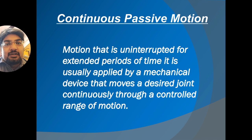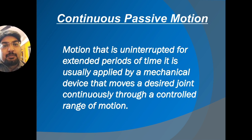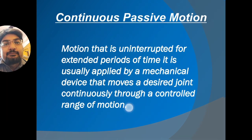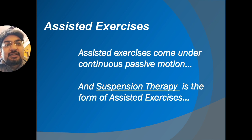Now for the types, effects, and uses — whenever a patient is immobile or has muscle strength of grade zero, we can only give passive movement. Continuous passive motion is uninterrupted motion applied by a mechanical device that moves a joint continuously through a controlled range of motion. Assisted exercise comes under continuous passive movement, and suspension therapy is a form of assisted exercise.